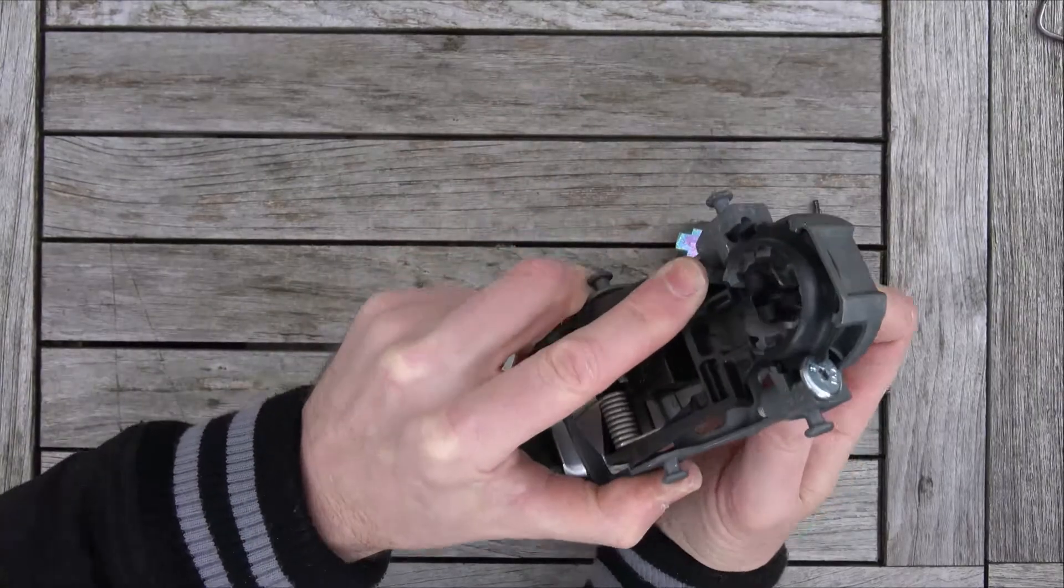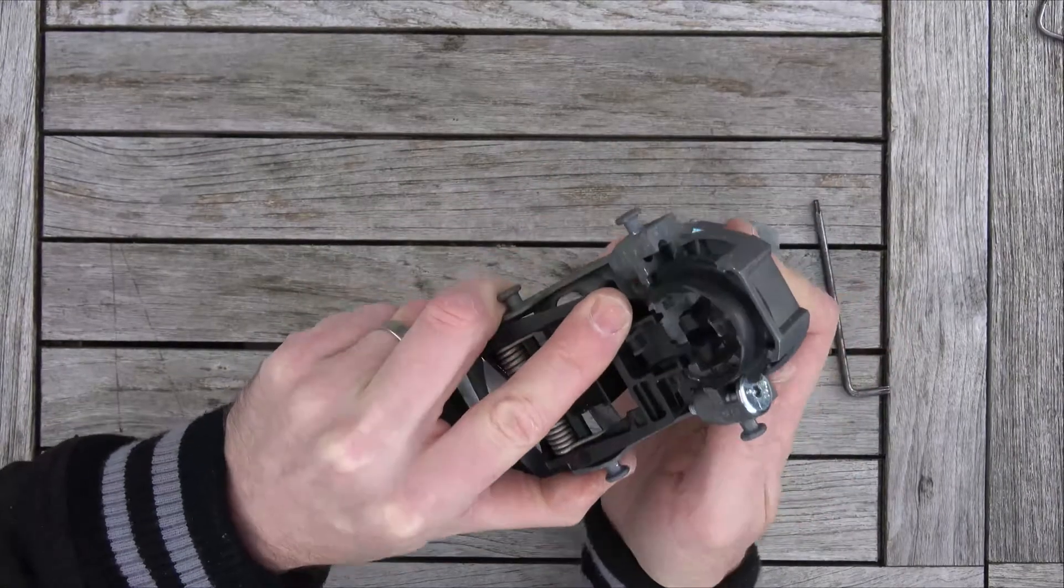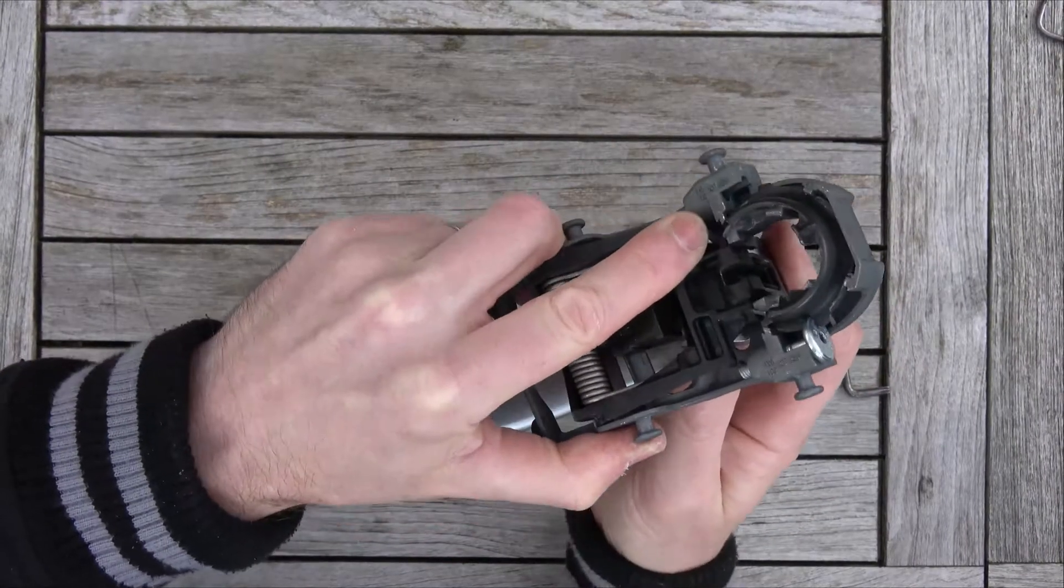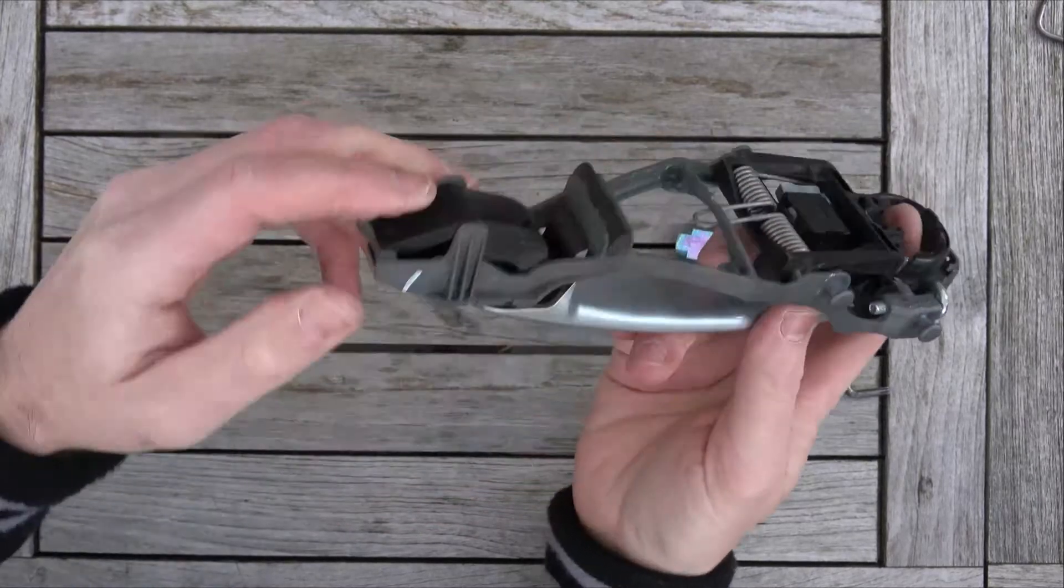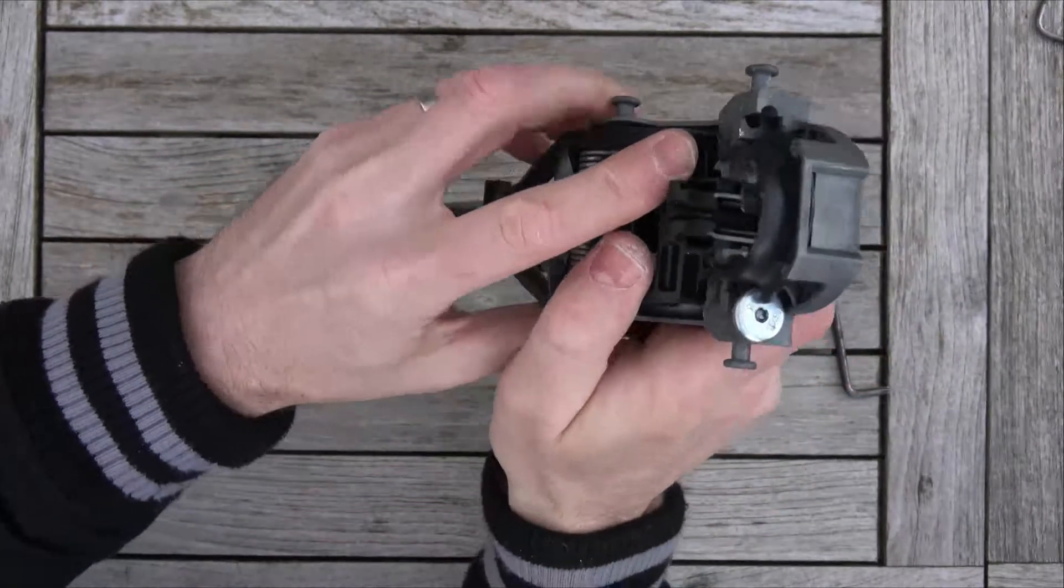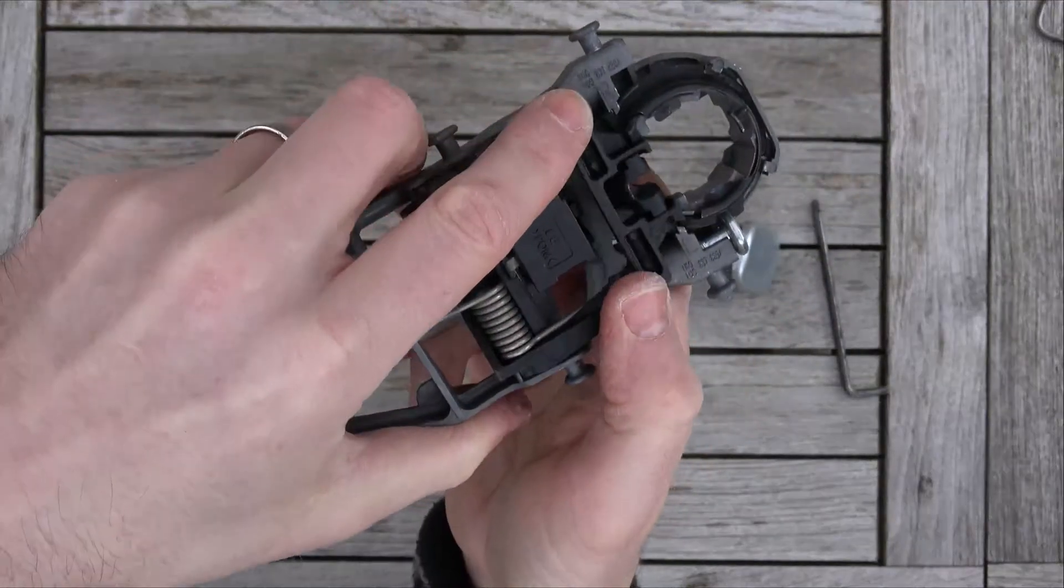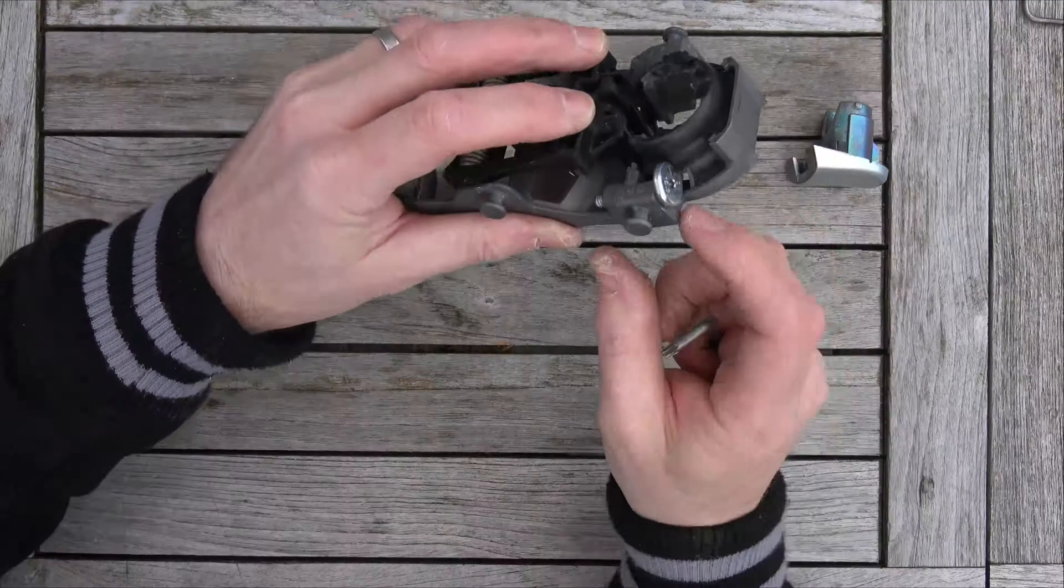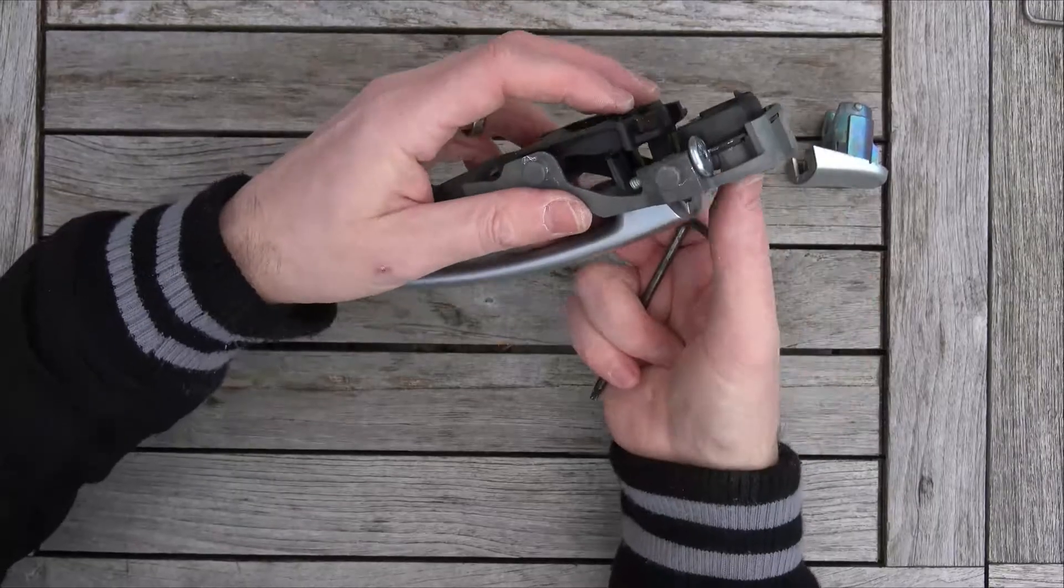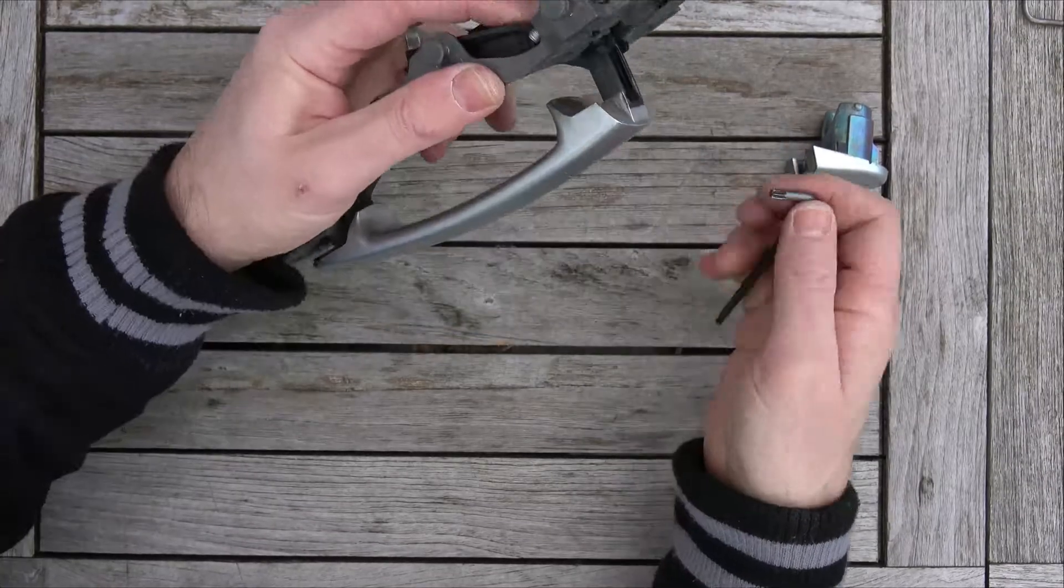And then push it all the way through and into there like so. Now that part's in here, and you can see the handle's gone into this part here. So now we're going to undo this 12 turns. We're going to have the handle all the way out while we're doing this.